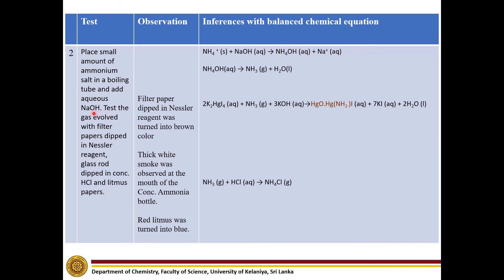When we add aqueous sodium hydroxide into ammonium salt, it evolves ammonia gas. This ammonia gas reacts with potassium mercuric iodide and potassium hydroxide present in the Nessler reagent and gives rise to this brown color precipitate.